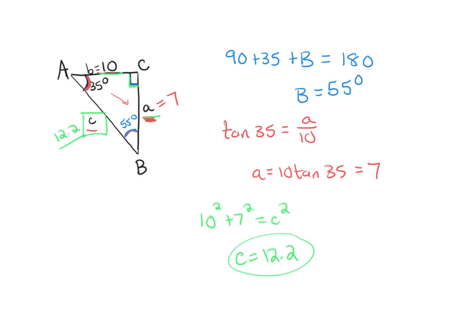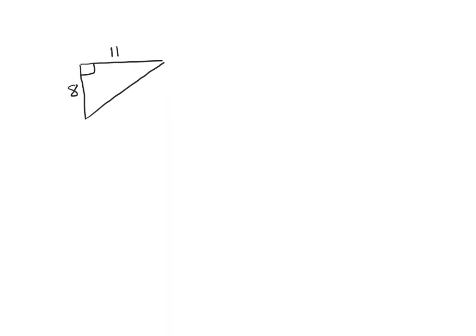Here is the next triangle. I'm going to call this angle A, which means this will be side length a, angle B with side length b, and angle C with side length c. We need to find all angles and all missing sides. I have two of the sides, so to find the third I can do the Pythagorean theorem: 8 squared plus 11 squared equals C squared, so C is going to equal about 13.6.